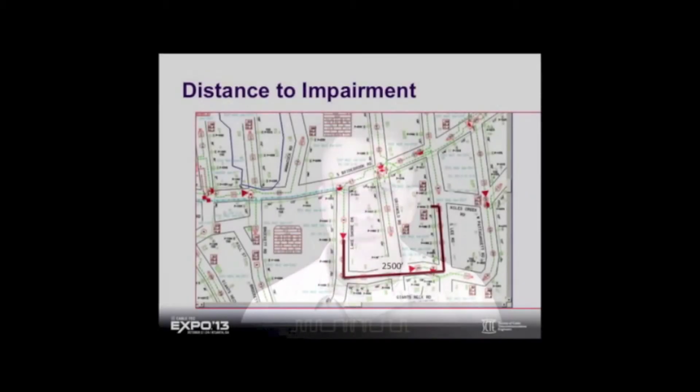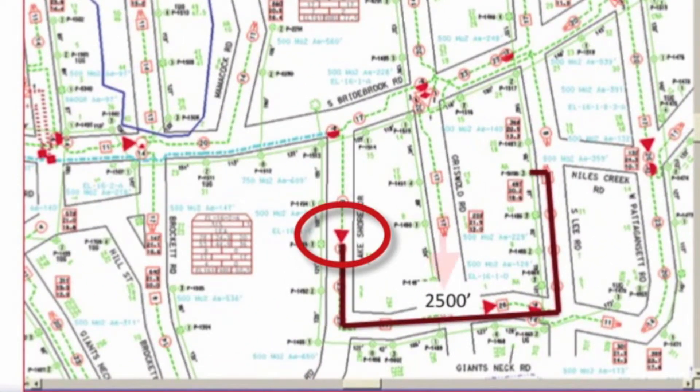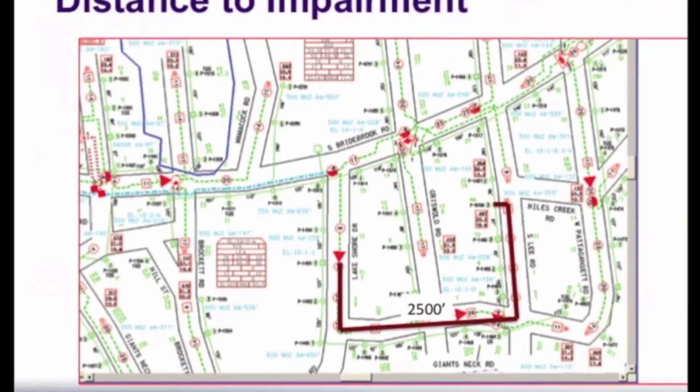Since our network maps show that there is an RF amplifier 2,500 feet away from the particular cable modem, we are able to send a truck directly to the amplifier and find out that there is a corroded center seizure screw causing micro-reflections. We repair the amplifier and see that the cable modem's pre-equalization data no longer shows the impairment, and its uncorrectable codeword errors have gone away.